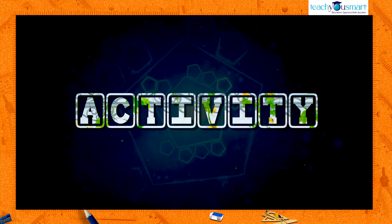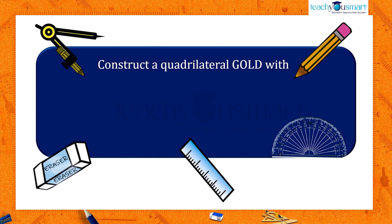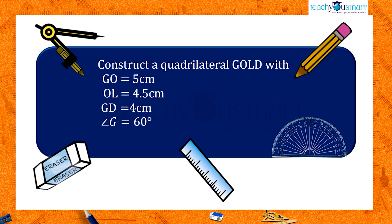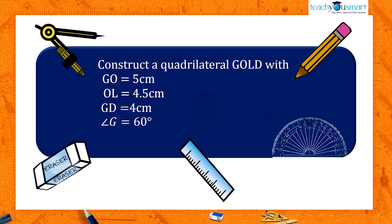Before winding up, here is an activity for you. Construct a quadrilateral GOLD with GO equals 5 cm, OL equals 4.5 cm, GD equals 4 cm, angle G equals 60 degrees, angle O equals 90 degrees.